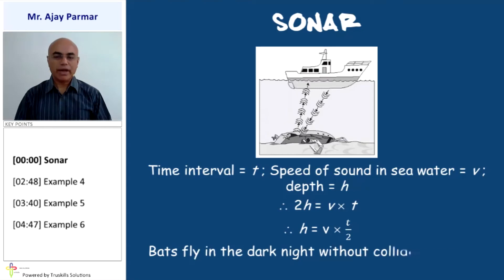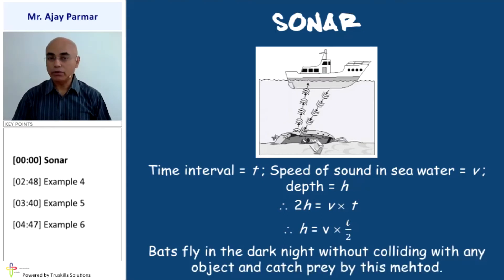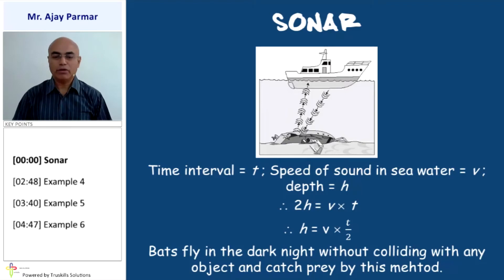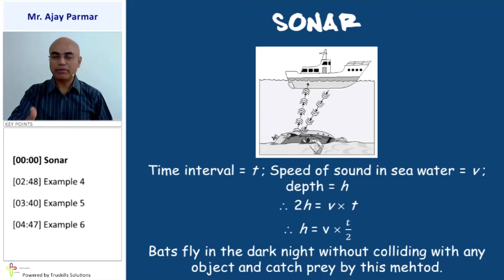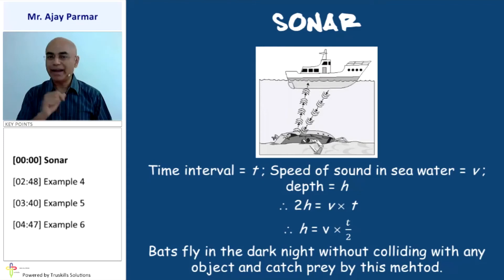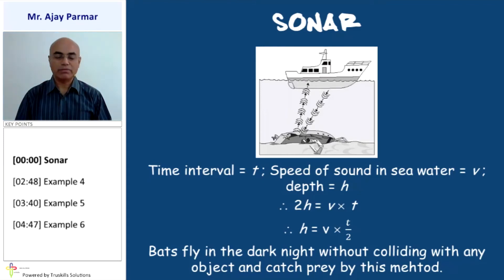Bats fly in the dark night without colliding with any objects, and they catch prey by the same method. When they approach any object like a tree or their prey, the sound is reflected back from that region, and from that the bat can identify how much distance is between itself and its prey or the obstacle in its flight.